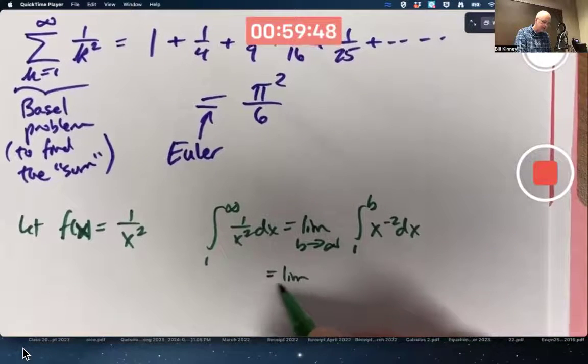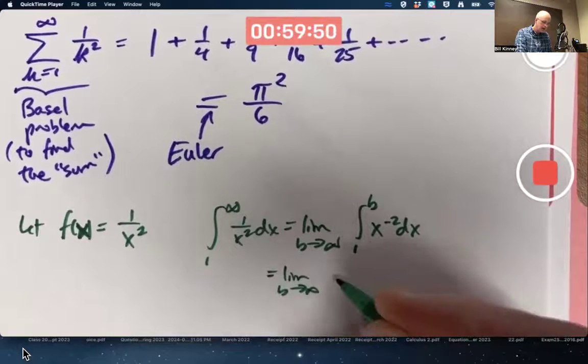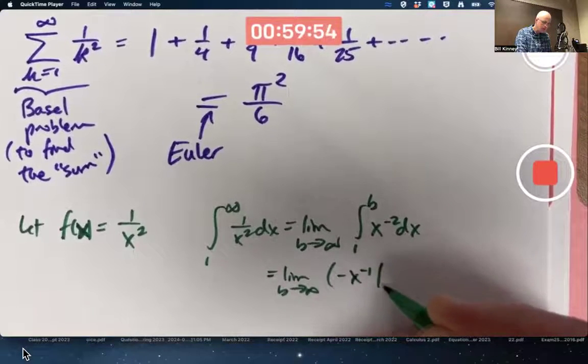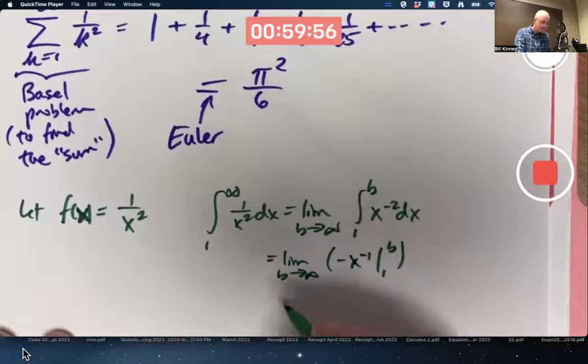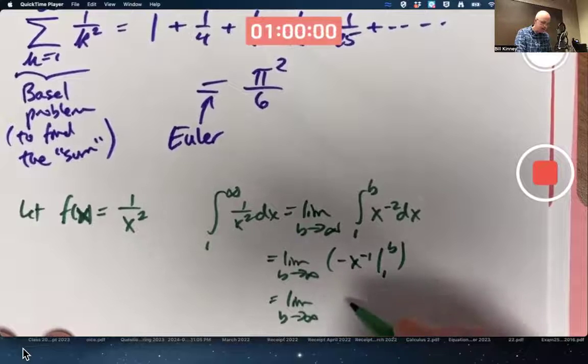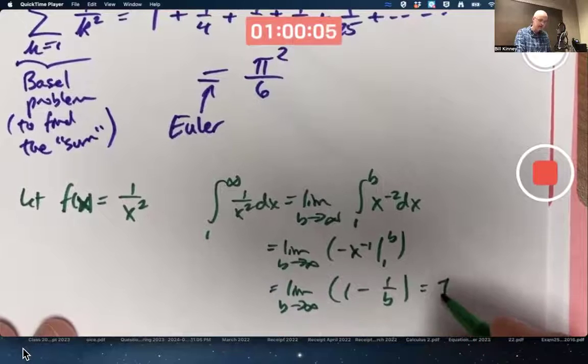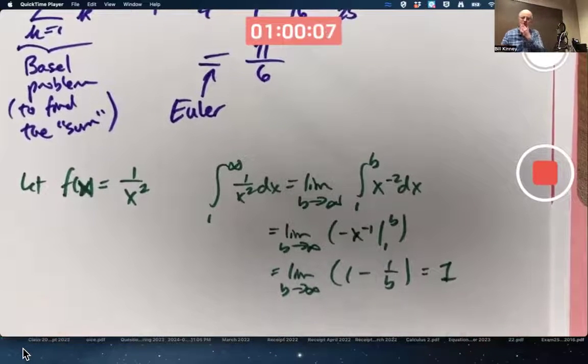like this. And we did this calculation before. We get the limit as b goes to infinity. The integral will be negative x to the negative 1 evaluated from 1 to b. That'll be in the end, the limit as b goes to infinity of, it'll be 1 minus 1 over b. And that equals 1. It exists. The improper integral converges.